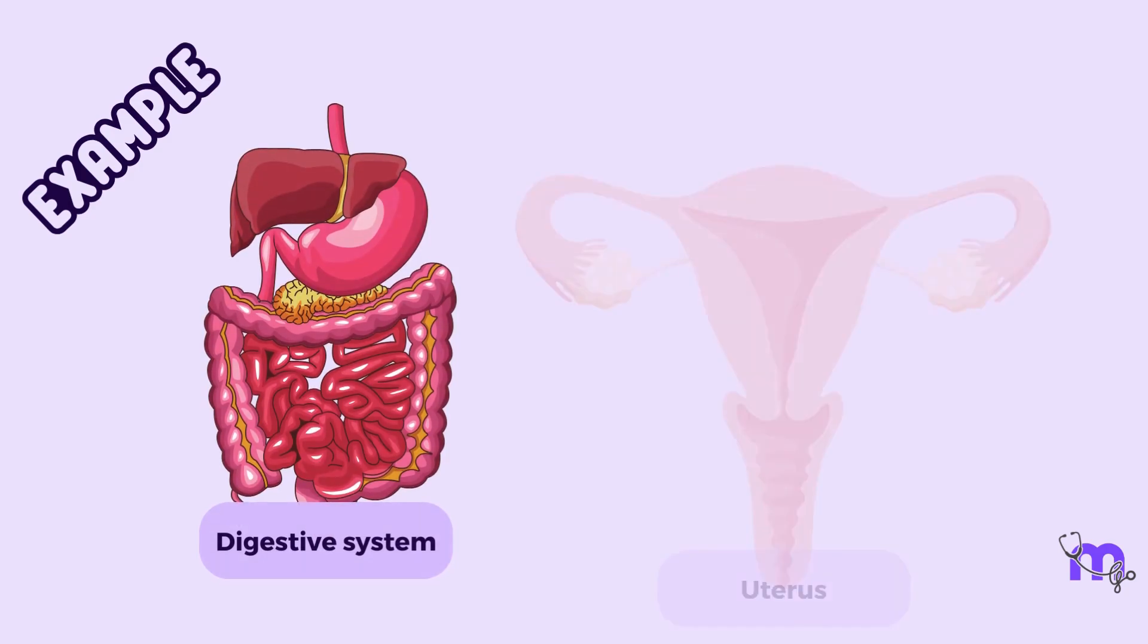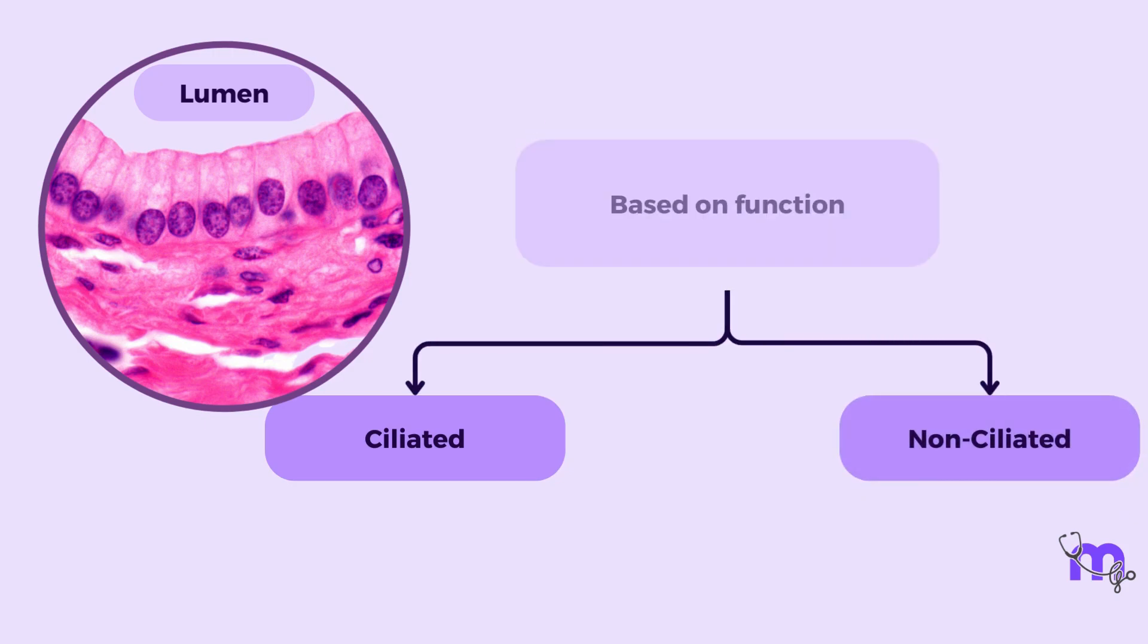The classic examples of where this can be found are the lining of the entire digestive system as well as the uterus. The upper border of the columnar cells faces the lumen of the tract and can be ciliated or non-ciliated depending on the function.